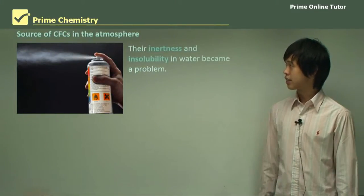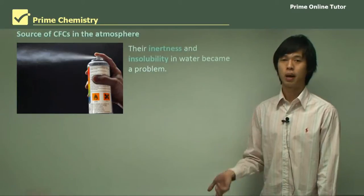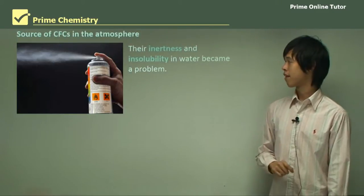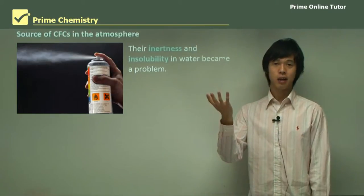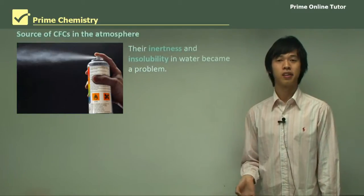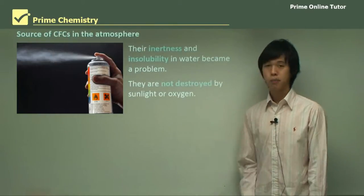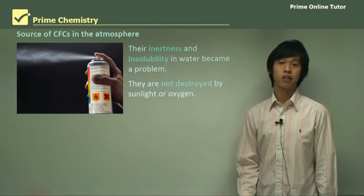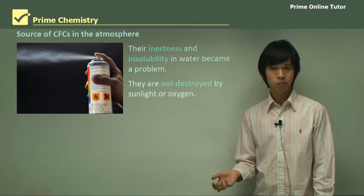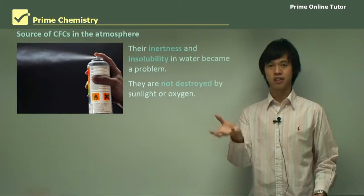So the sources of CFCs in the atmosphere — remembering they're chlorofluorocarbons, just chlorine, fluorine, and carbon, nothing else. Because of their inertness and insolubility in water, they can rise into the atmosphere, not react with anything, and stay completely undamaged. Because they're insoluble, they don't come back down when it rains, so they diffuse up into the atmosphere. A key point is that they're not destroyed by sunlight or oxygen, so as they slowly rise, the oxygen and the sun don't damage them — they remain completely undamaged as they rise.